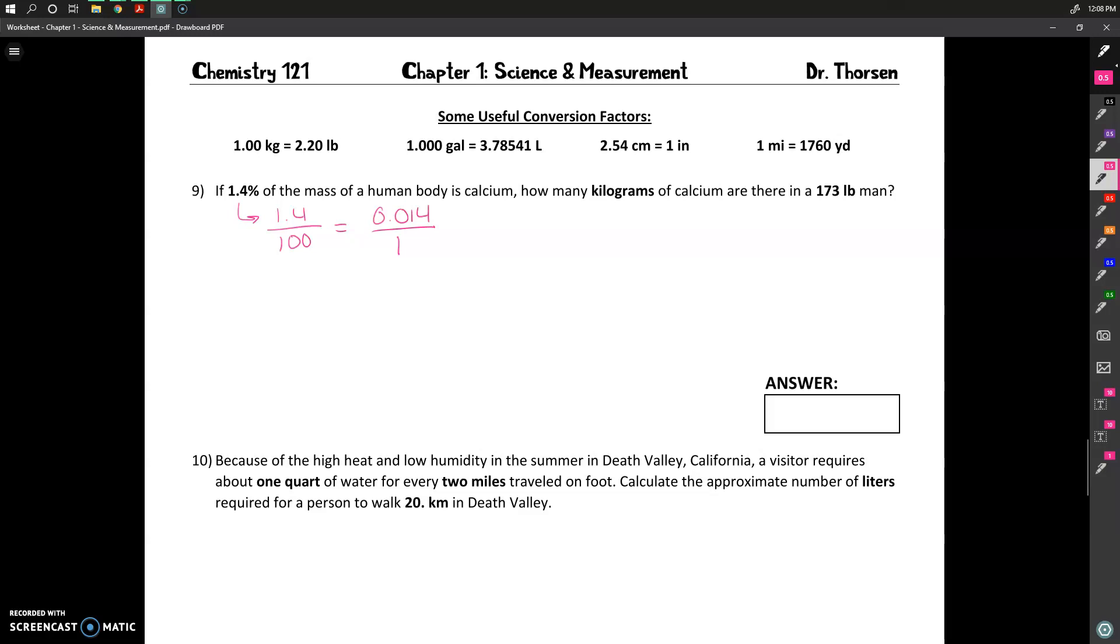But if we're trying to express this as a conversion factor, let's recognize that part of the point of that is to see how the units are related to each other. And so we want to have that ratio between the units. And so that's why I'm including the 1 on the bottom there. But either one of these expressions would work for 1.4%. In fact, you could even do other multiplications of this. You know, 14 over 1,000 would still be the same ratio.